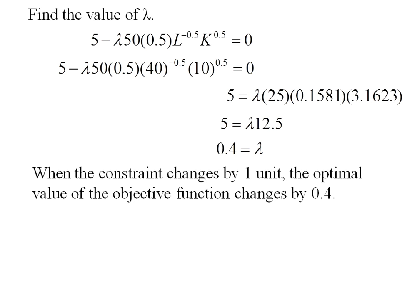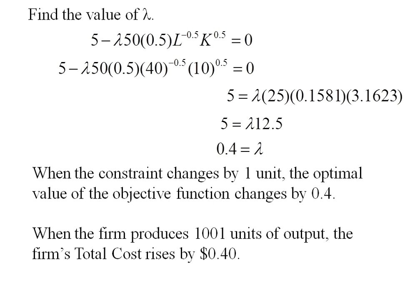What this means is when the constraint changes by one unit, the optimal value of the objective function is going to change by point four. Or in our case, if the firm has to produce a thousand and one units of output, the firm's total cost is going to rise by forty cents.